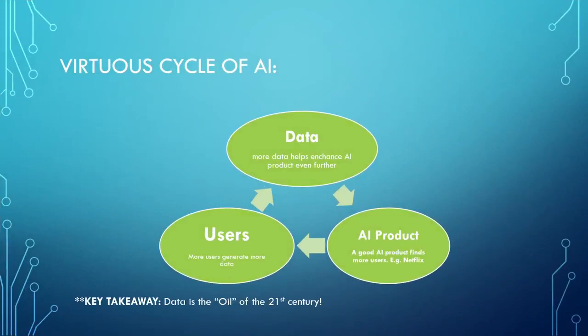The key takeaway is: more data helps enhance the AI product further. A good AI product finds more user examples. For instance, on Netflix, if you watch a horror movie once, then watch another horror movie, the recommendation engine will suggest horror movies at the top. More specifically, if you always watch horror plus adventure, you will find horror and adventure recommendations more prominently.